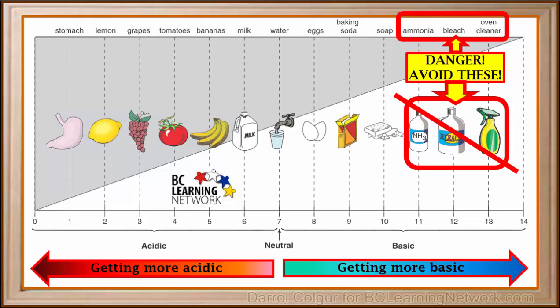Be aware that any substances with high pH values like ammonia, bleach and oven cleaner are very dangerous, so make sure you always avoid these substances.